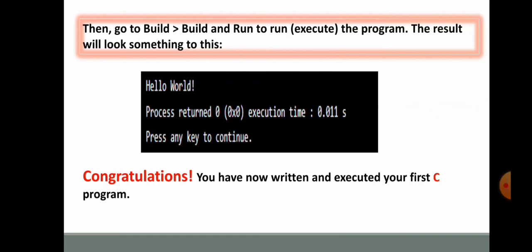You execute it. You can also compile and execute. You can also press the F11 key. At the end, you have to execute it and bring it to runable condition. The result will look something like this. Your first code's output is displayed, that is Hello World, and its process return execution time is displayed. As soon as you press any other key, you will go back to your source code. Congratulations! You have now written and executed your first C program. Thank you.